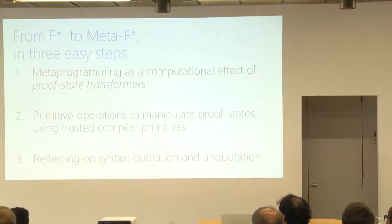And the way that we do this in F-star is in what I think of as three steps. The first is you see meta programming as a computational effect of proof state transformers. So a meta program starts with a proof state, does some stuff to it, produces a final proof state. And you compose meta programs this way.